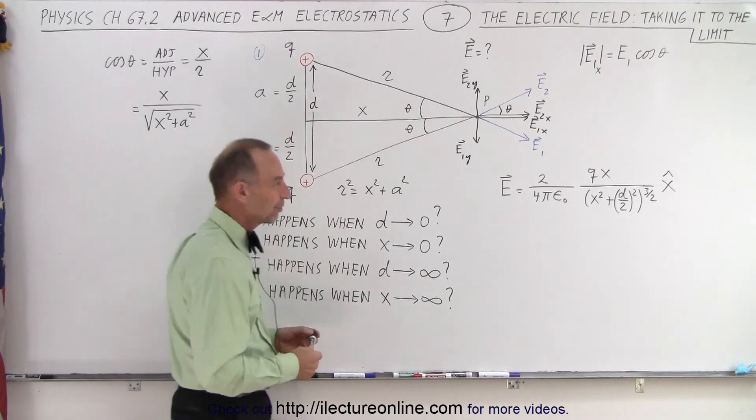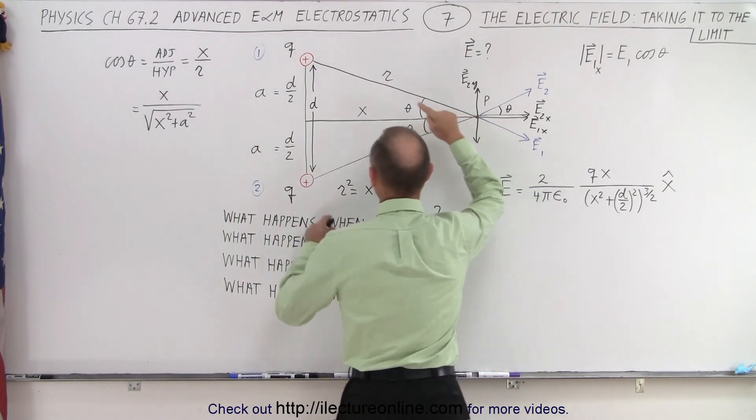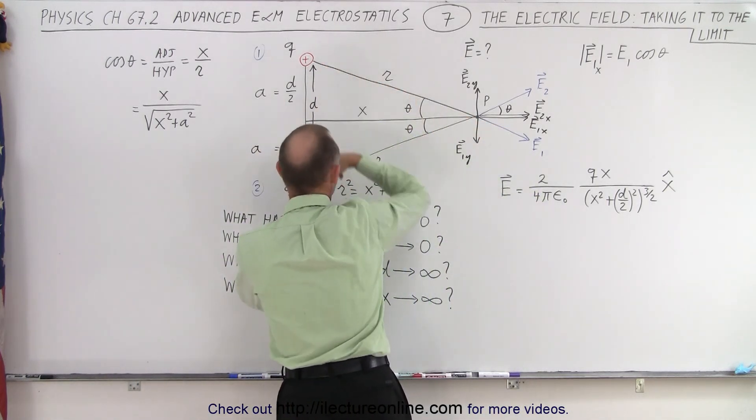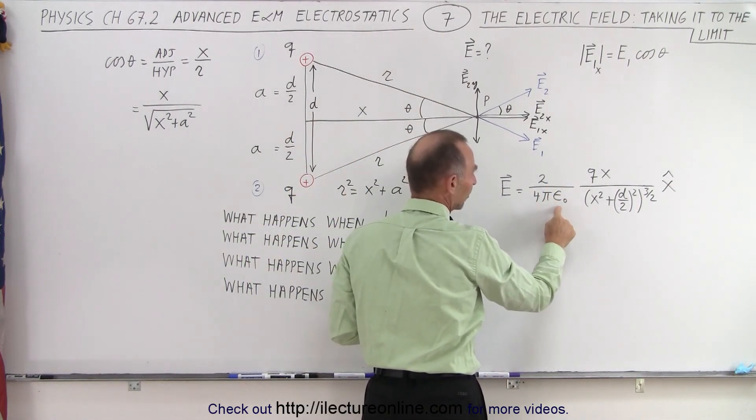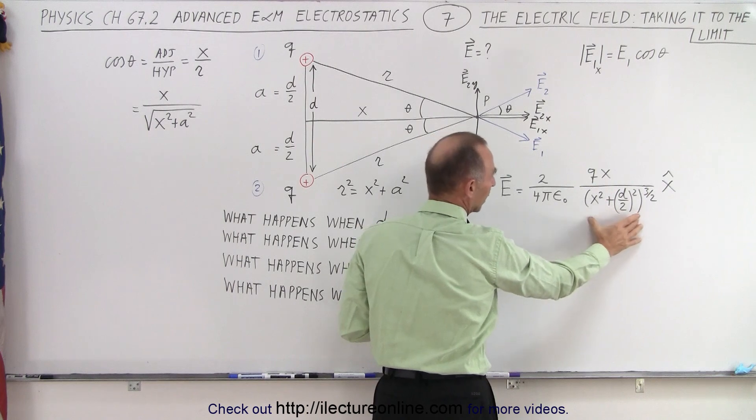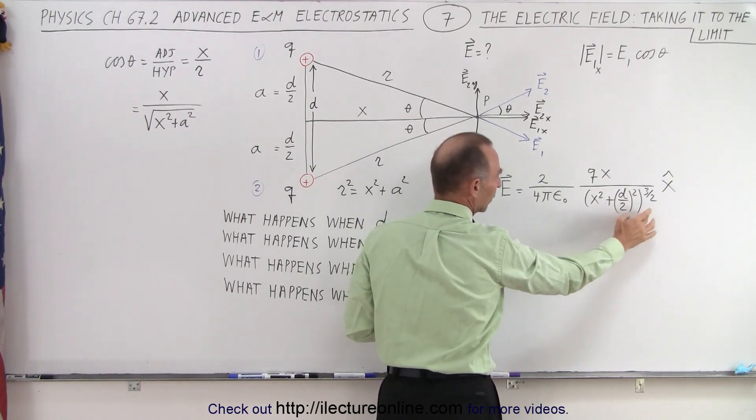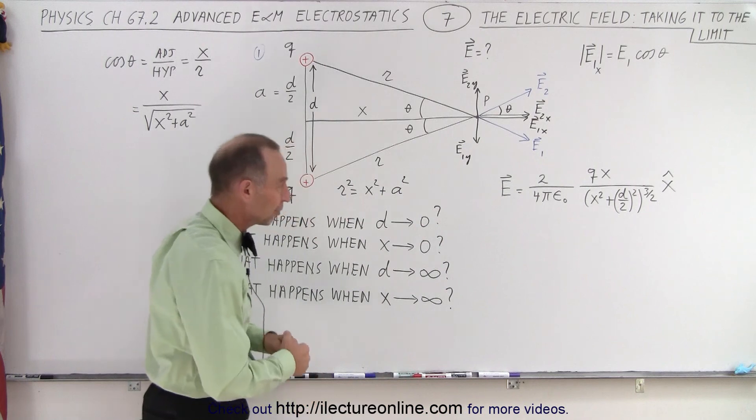For example, in the previous video we ended up finding the electric field at this point due to the two charges, distance d apart. And we found it to be 2 divided by 4πε₀ qx over the quantity (x² + (d/2)²) raised to the 3/2 power pointing in the x direction.